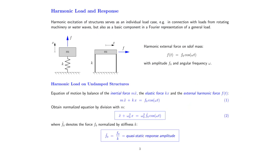We will consider a single degree of freedom structure — the so-called SDOF structure — with a single mass m suspended to the ground by a spring with spring stiffness k. Our equation of motion will be the two-term version, with the inertia term given by mass times acceleration, and the restoring force given by k times displacement x. In the last lecture we had a zero right-hand side, but today we impose an external loading f.